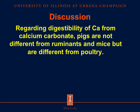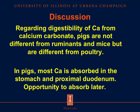In regards to the digestibility of calcium in diets containing calcium carbonate ground to different particle sizes, pigs are not different from mice and ruminants. They are different, however, from poultry. We believe that poultry are the unique species here. This may be due to the differences in transit time of digesta and or the presence of the gizzard. Also, it is important to note that in pigs, most calcium is absorbed in the stomach and proximal duodenum. Therefore, if differences existed in the early absorption due to particle size, the pig would have more opportunities to absorb the calcium further down the intestinal tract.